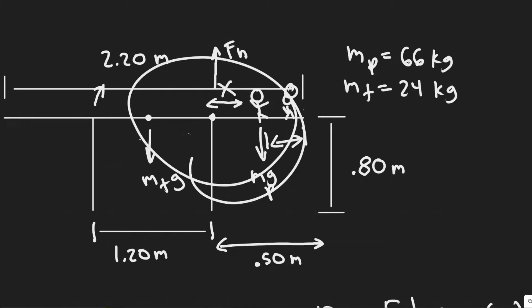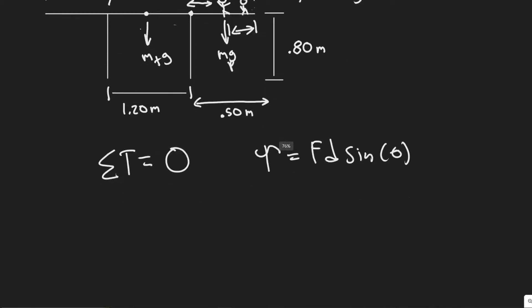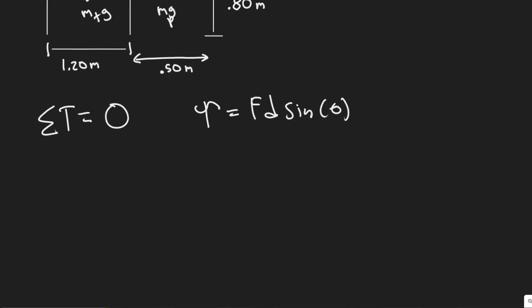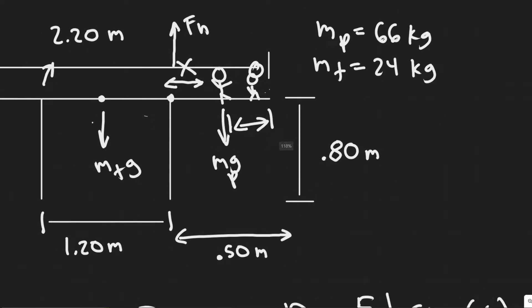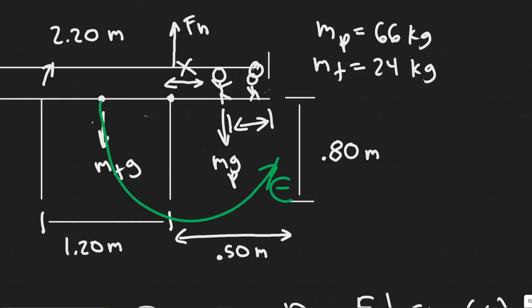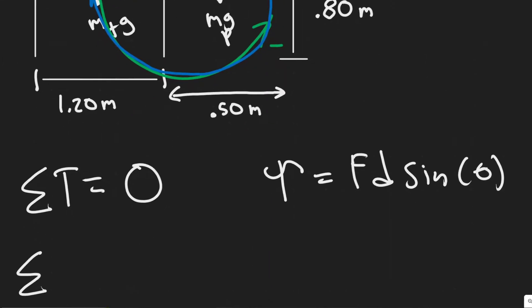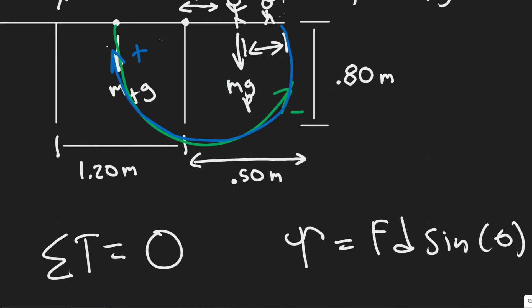We're going to be rotating around this point, not the other leg. Another thing you have to know is when you sum up the torque, the direction matters. The torque due to the person is going to rotate it counterclockwise - and if the torque makes it rotate counterclockwise, you choose it to be negative. And then if it rotates in the clockwise direction you count it as positive. So when we sum them up: if it's clockwise it's positive, if it's counterclockwise it's negative.